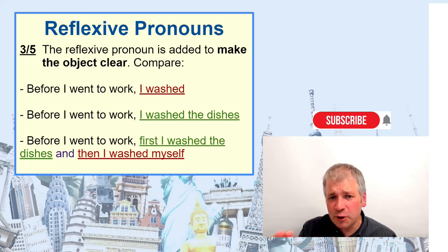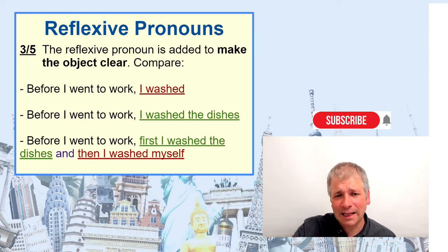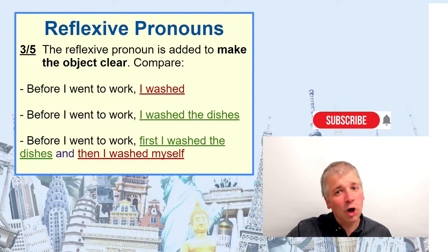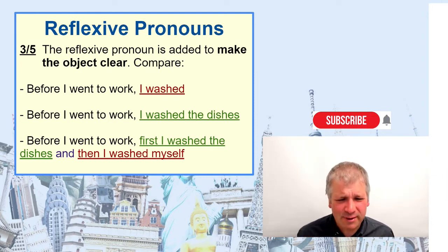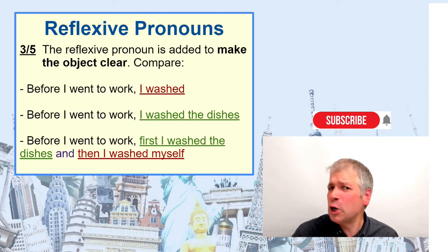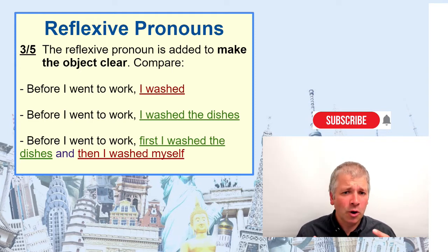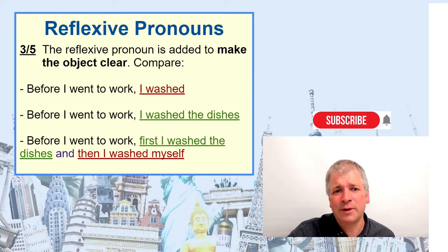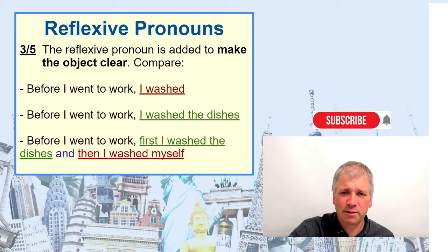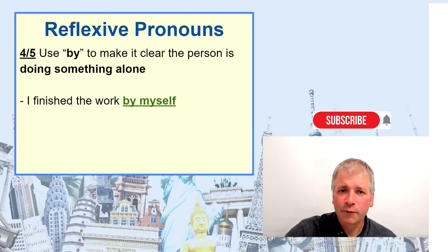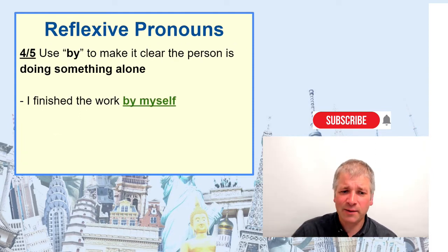We need to use 'myself' to make it clear what or who we are washing. If we said 'first I washed the dishes and then I washed,' we're not really sure who or what the washing is happening to. So we need to add 'myself' — we need to use the reflexive pronoun here because the context doesn't make it clear who or what is being washed.